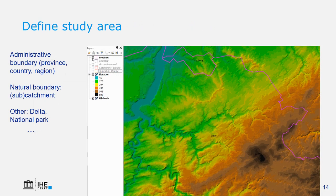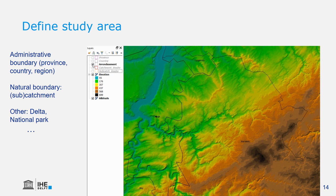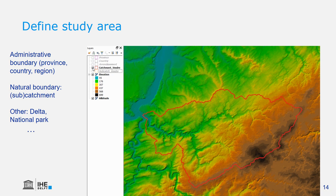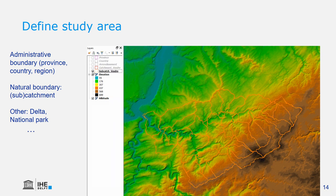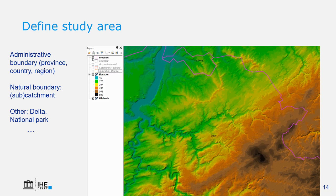GIS can also be used for delineating boundaries. We can look at administrative boundaries such as province, country, or arrondissement. We can also look at natural boundaries such as catchments or sub-catchments. And there are more loosely human-defined boundaries such as a delta or a national park.